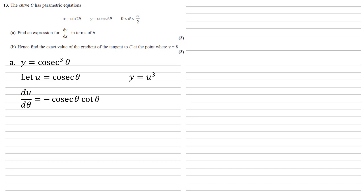We're also going to differentiate dy with respect to u, which is 3u squared. Substituting our u equals cosec θ back into that, we get 3 cosec squared θ.